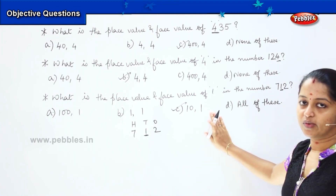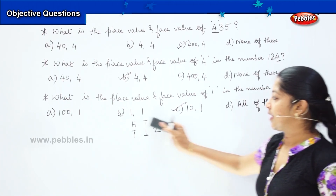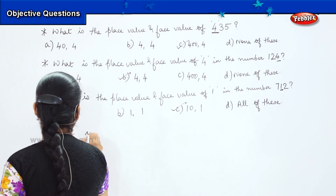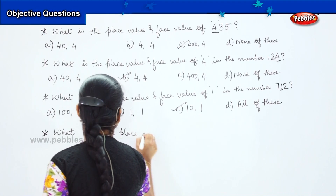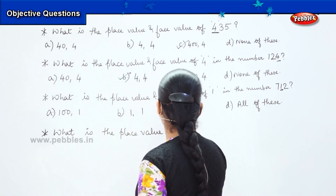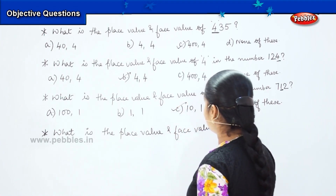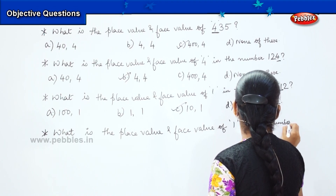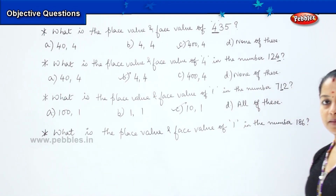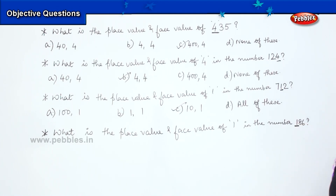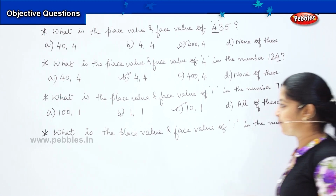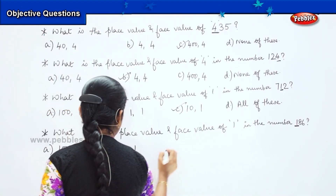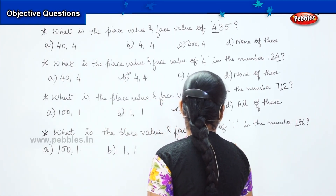Is it easy, children, to solve these types of questions? Shall we go for a few more sums? Here is your next sum: what is the place value and face value of 1 in the number 186? My options are: option A — 100 and 1; option B — 1 and 1; option C — 10 and 1; and option D — all of these.